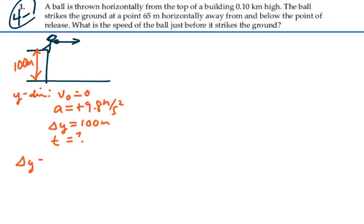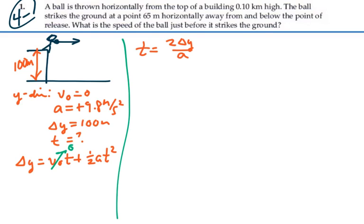In other words, displacement is equal to initial velocity times time plus one-half acceleration times time squared. In this case, the initial velocity is zero. And as we solve this for time, we would have that time is equal to two times the displacement divided by the acceleration, square root, which would be two times 100 divided by 9.8, square root, and that's equal to 4.52 seconds.